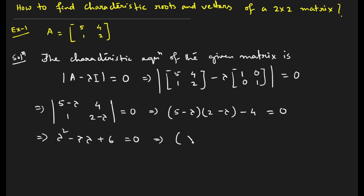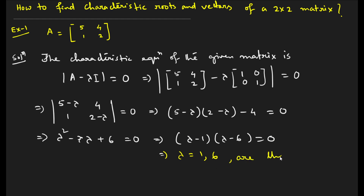Factorizing lambda squared minus 7 lambda plus 6 gives (lambda minus 1)(lambda minus 6) equals 0. That means we have two values of lambda: lambda equals 1 and lambda equals 6. These are the characteristic roots.